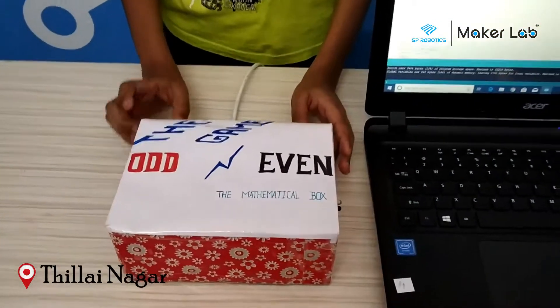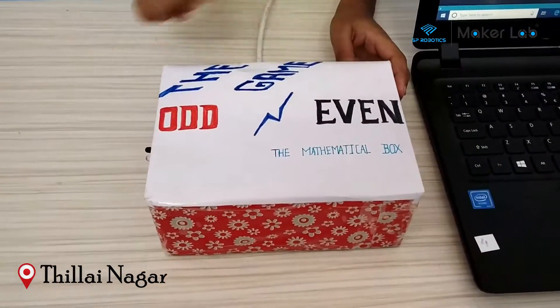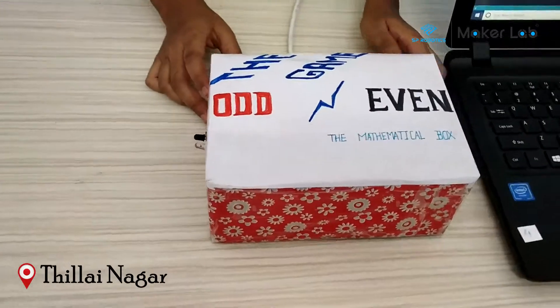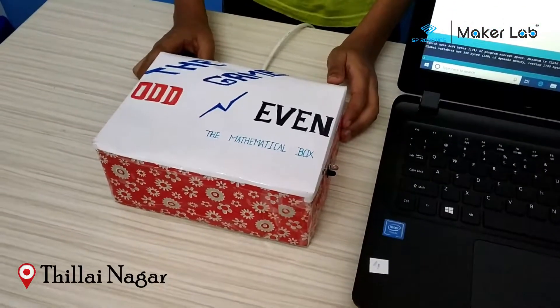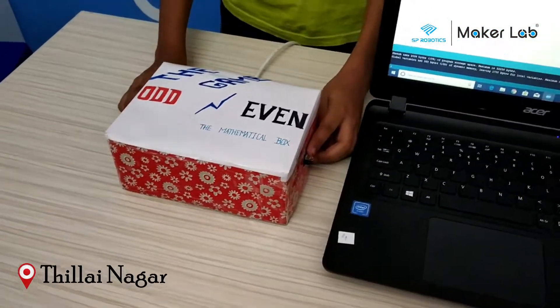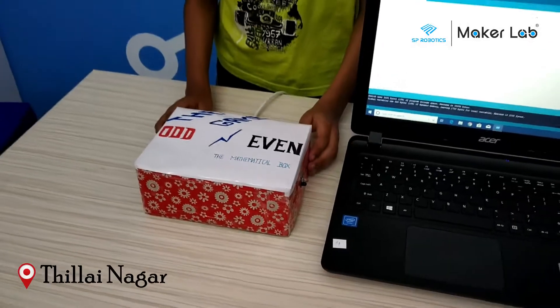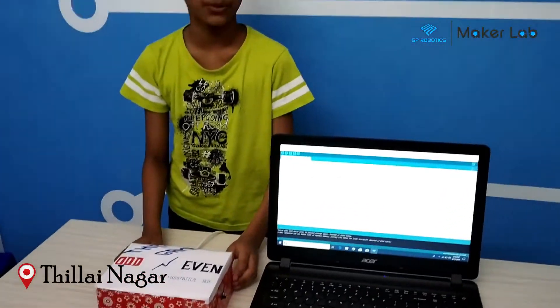It is the game order event, the mathematical box. The components that I have used are two ISM saws, a battery, autumn shield and speed.